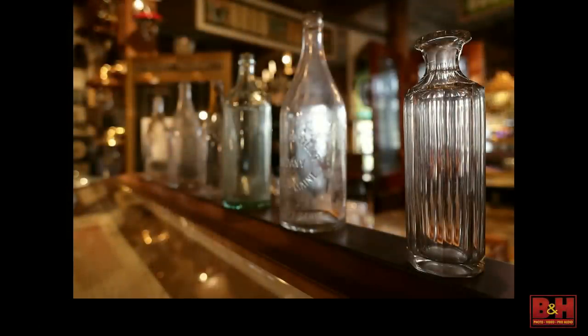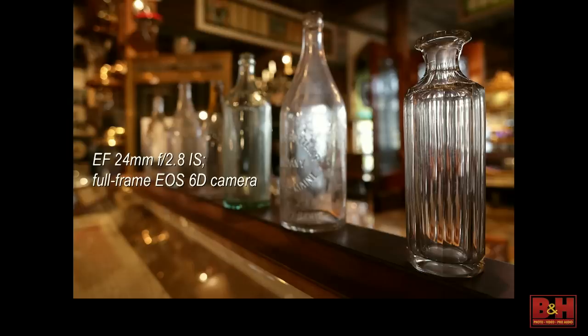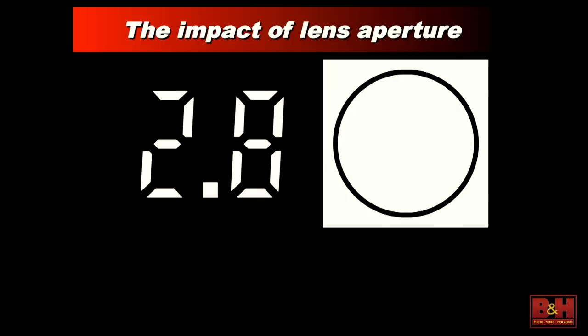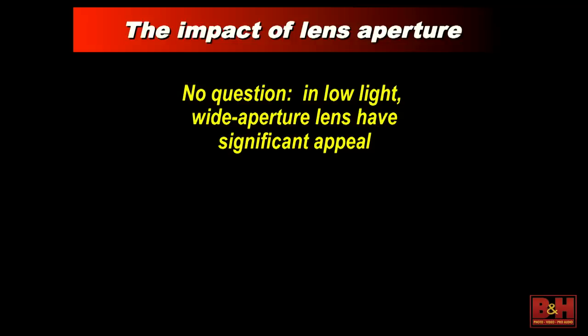A shot like this taken with the 24-28mm with image stabilization on a 6D is sharp. The compact size and image stabilization make it easy to hand-hold at a slower shutter speed, and at f/2.8 it's a very practical lens for indoors. Let's briefly talk about the impact of a lens's aperture — this goes beyond wide-angle and comes into the discussion whether we're talking telephoto or anything else. We're talking about the maximum aperture a lens can open up to. The lower the number, the wider the maximum aperture, the more light it can let in, and the better suited it can be for shooting in low light.